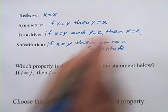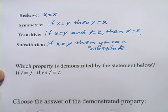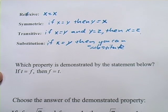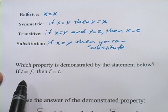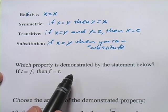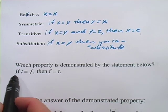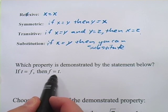Now with these problems, the only trick is recognizing which property is at work, and I don't think it's going to be too hard. Let's look at this first one. It says which property is demonstrated by the statement below, and the statement is if t equals f, then f equals t.